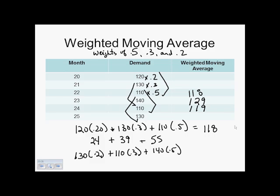I can take them and multiply by the 0.2, 0.3, and 0.5. Add them all together, and you should get 126. This right here is the weighted moving average.